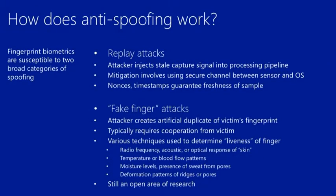Regarding anti-spoofing: there are two types of attacks this technology is susceptible to. First, replay attacks — where an attacker injects a previously captured fingerprint signal sample into the processing pipeline. Mitigation for these typically requires a secure channel between the host and sensor, and non-reuse of nonces and timestamps to guarantee the sample provided is fresh. Second, fake finger attacks — where an attacker creates a fake replica of a finger, usually requiring some cooperation from the user, such as lifting a fingerprint left on a glass.